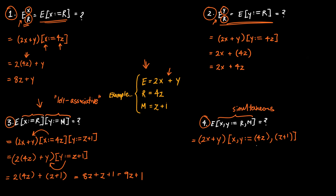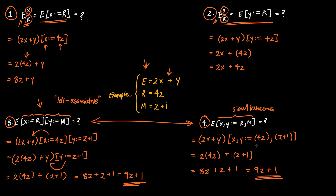In simultaneous substitution, we don't have to obey any particular order — we perform all substitutions in one step. So we replace X with 4Z and Y with Z plus 1 at the same time, landing us at 2(4Z) plus (Z plus 1). Eliminating unnecessary brackets and expanding gives 8Z plus Z plus 1, which is 9Z plus 1. Again, in this case the simultaneous substitution is equivalent to the sequential one, but that will not always be the case.